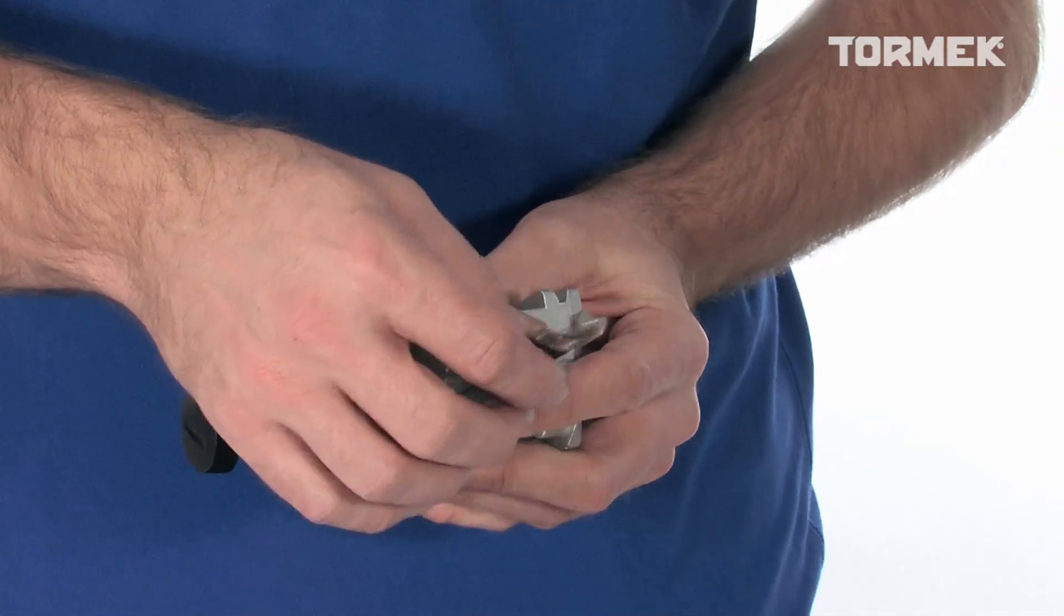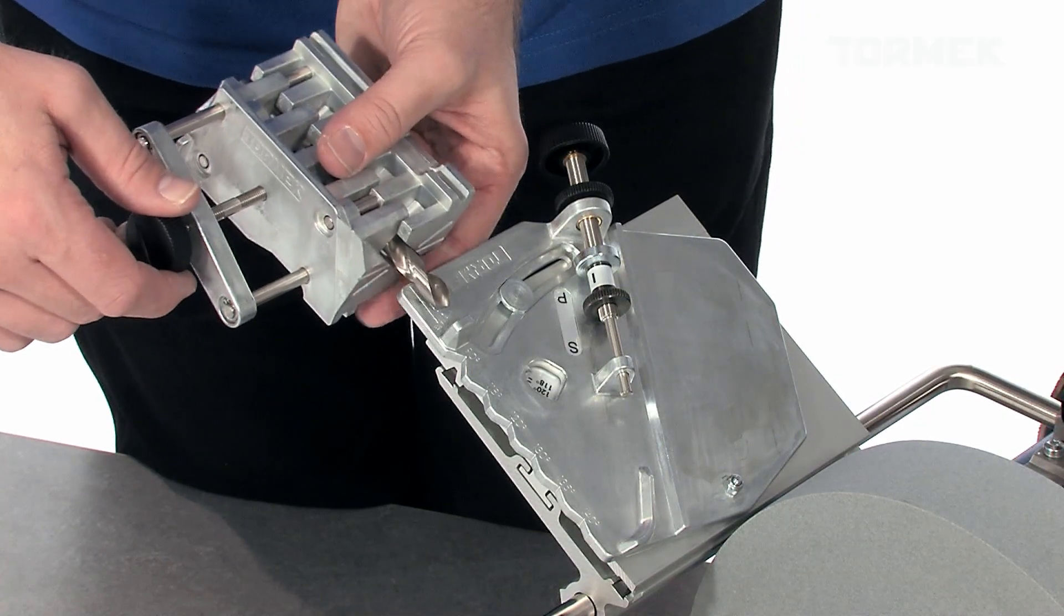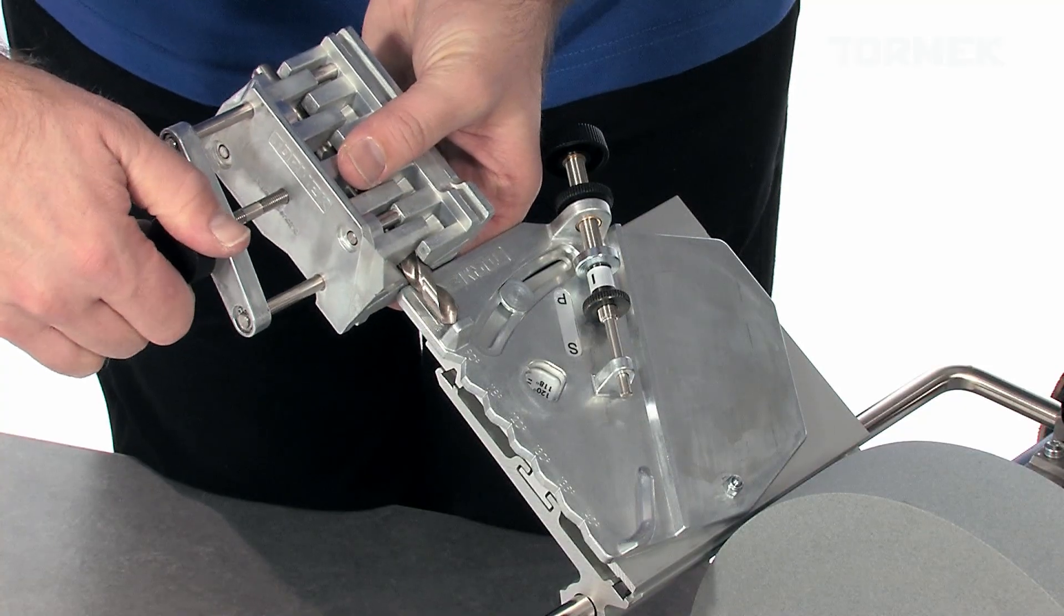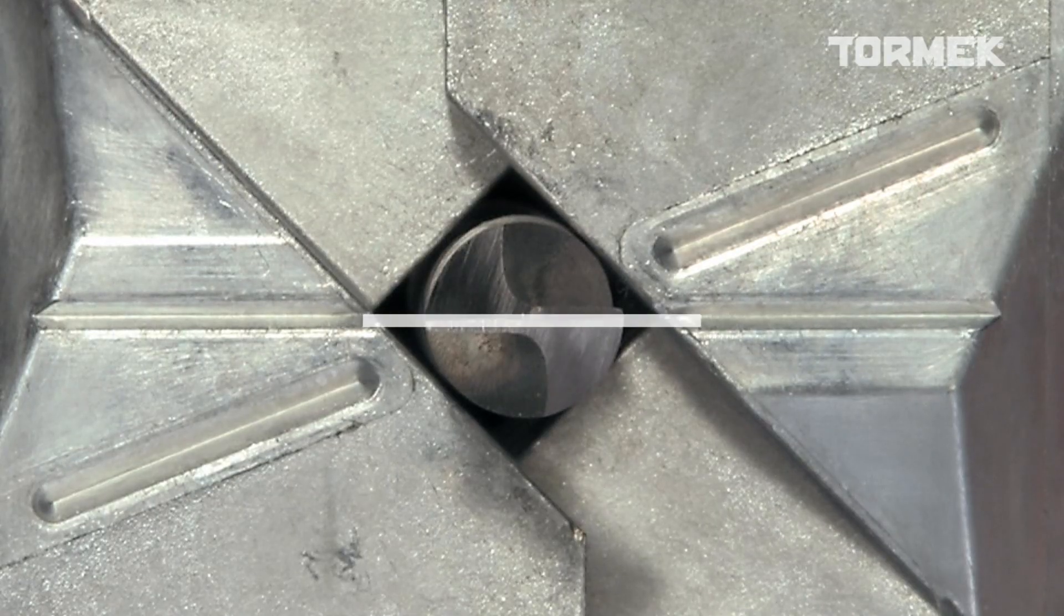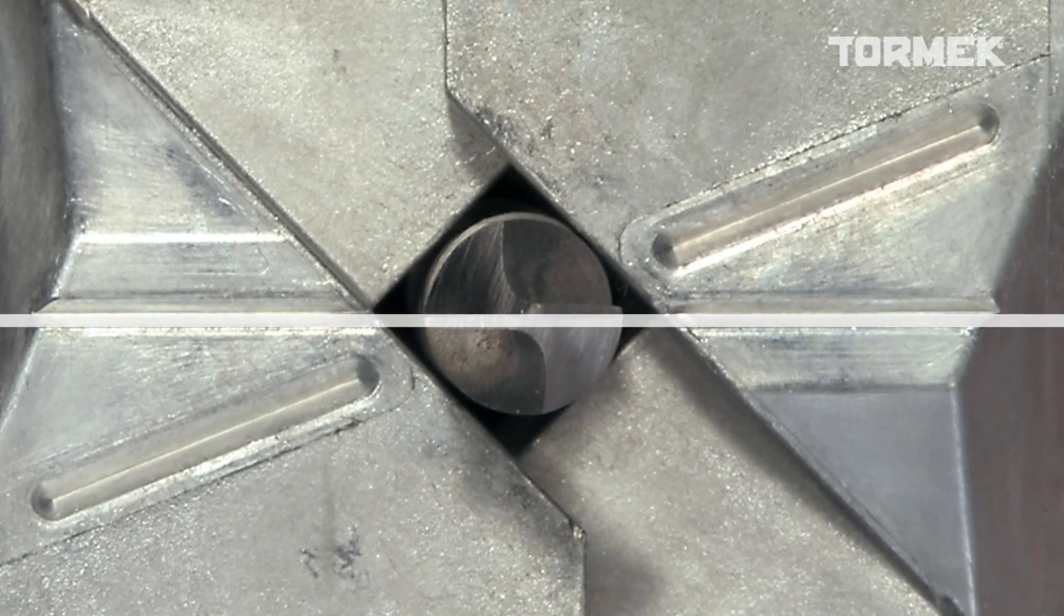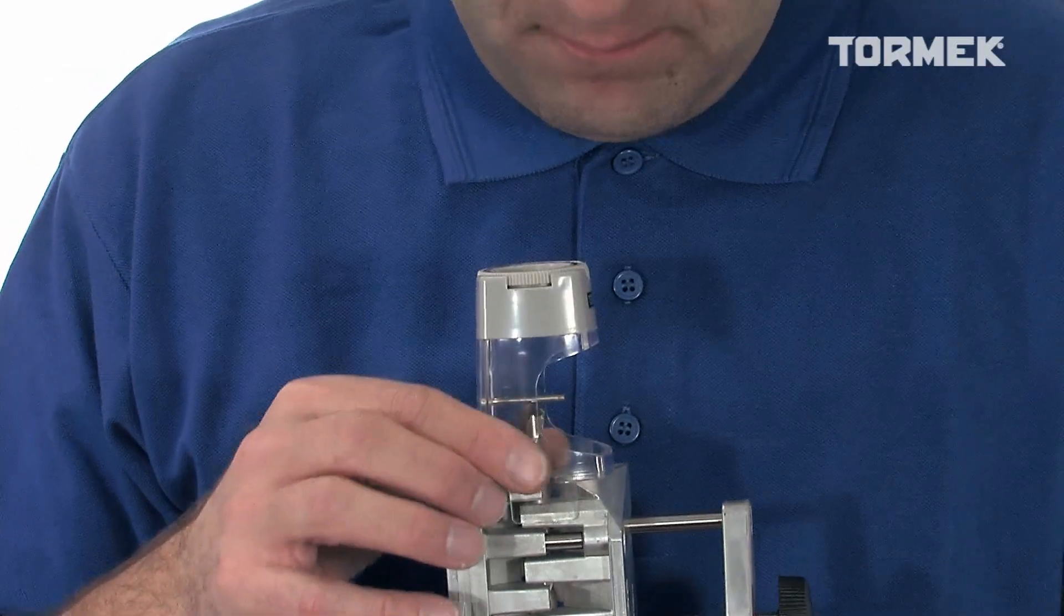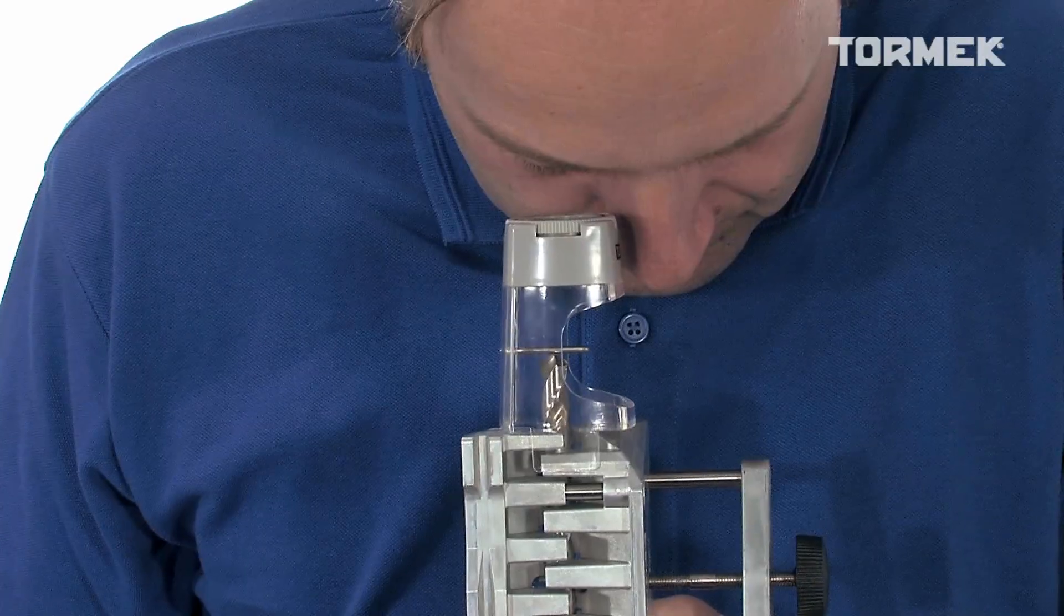Mount the drill in the holder. Set the protrusion with the measuring stop on the guide. Now carefully align the cutting edges so that they are parallel with the horizontal lines. A magnifier is supplied for smaller sized drill bits. Align the edges so they are parallel to the pin in the magnifier.